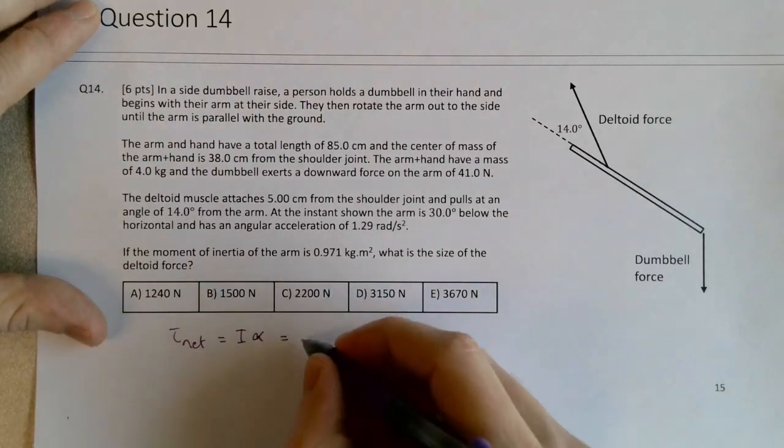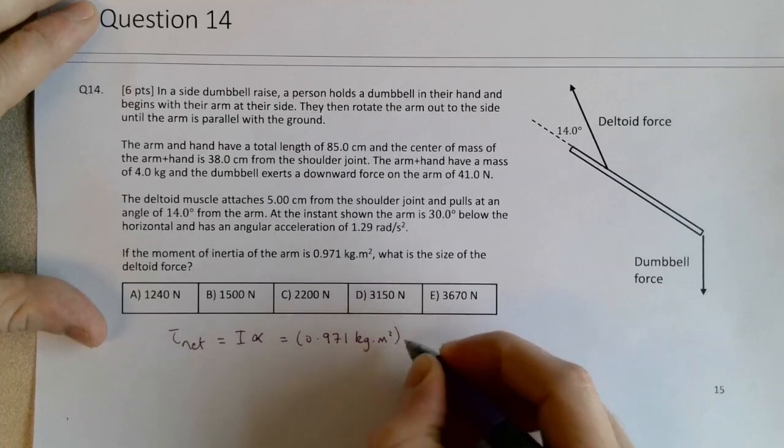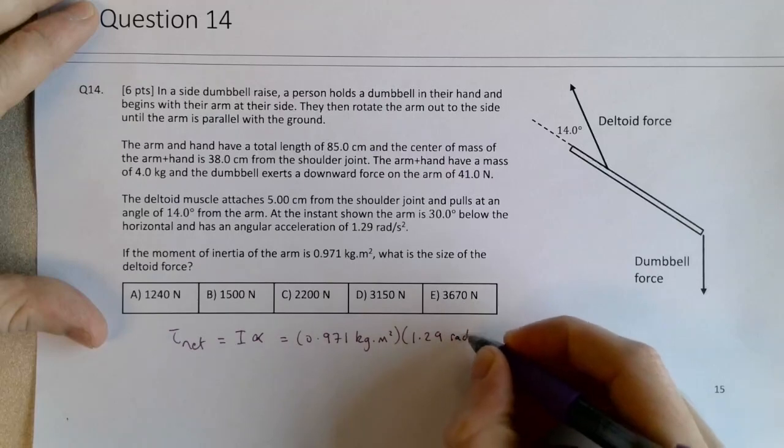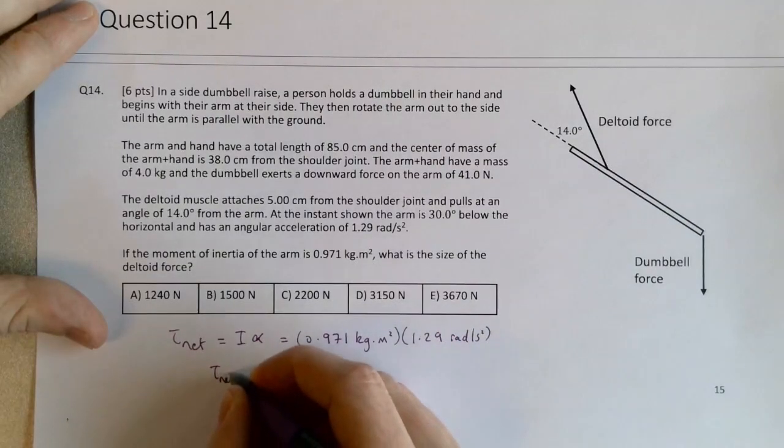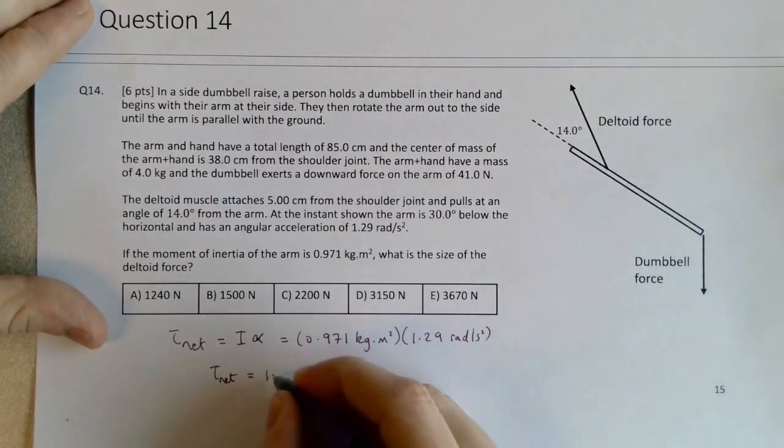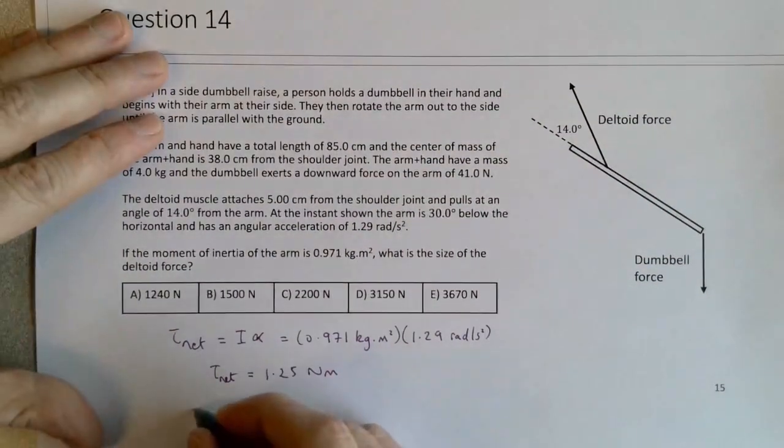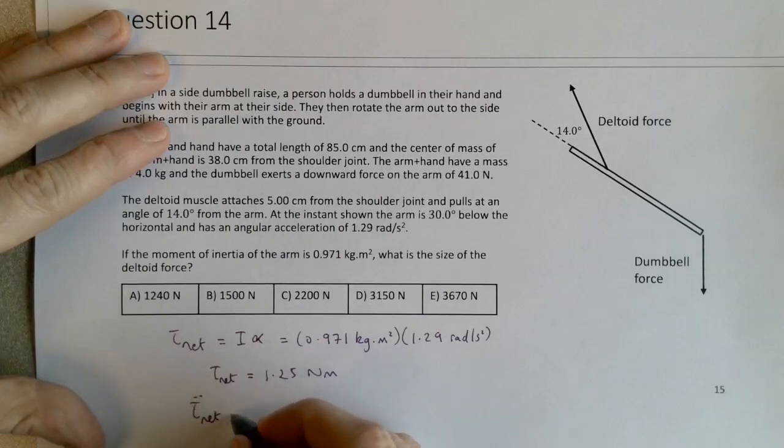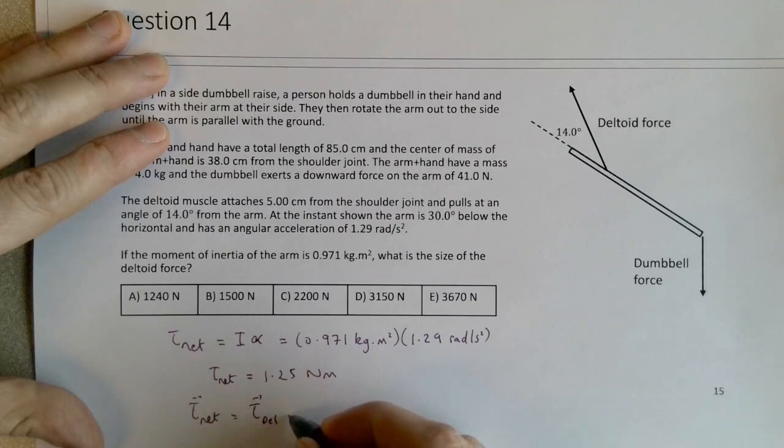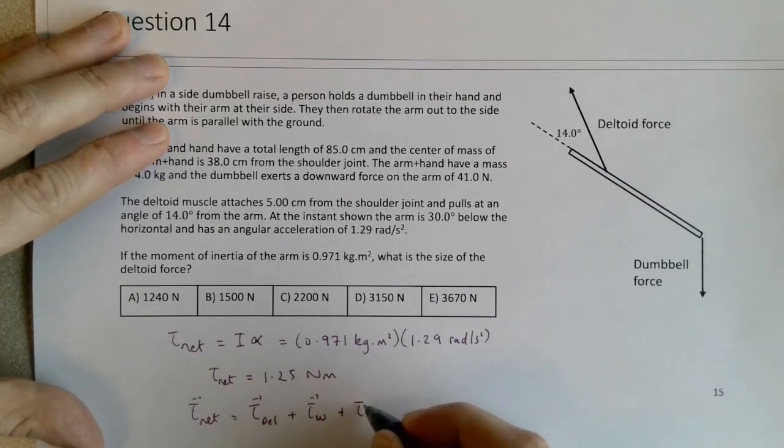We're given the moment of inertia is 0.971 kg·m² times the alpha that's given here in the correct units, radians per second squared. So the net torque is pretty small, 1.25 Newton meters. And what this net torque will be equal to, thinking about the vectors, is going to be torque of the deltoid plus the torque due to the weight of the arm plus the torque due to the dumbbell.